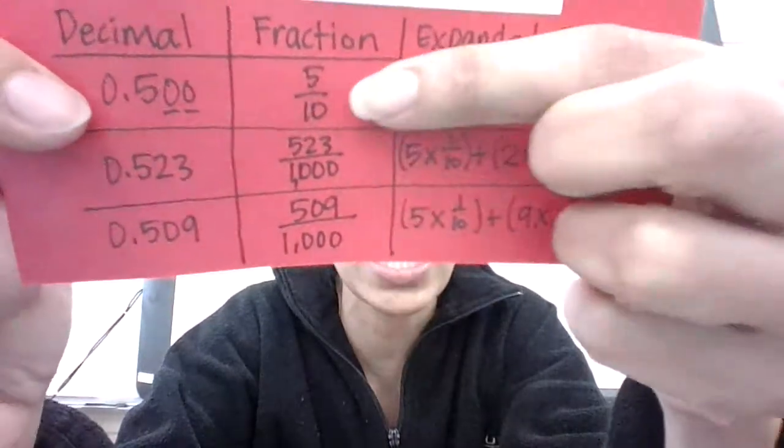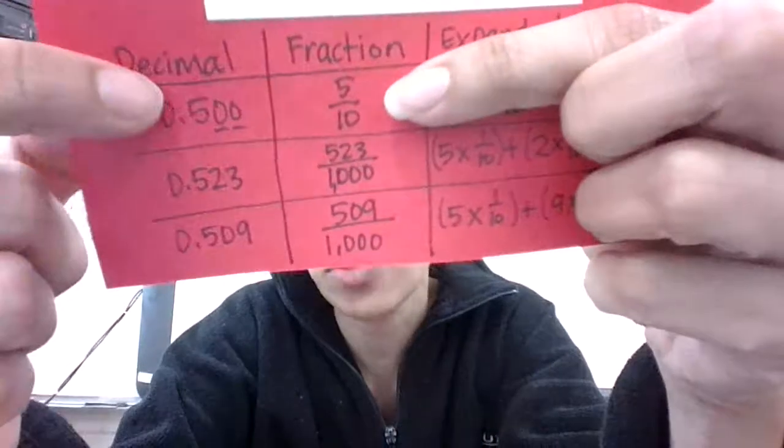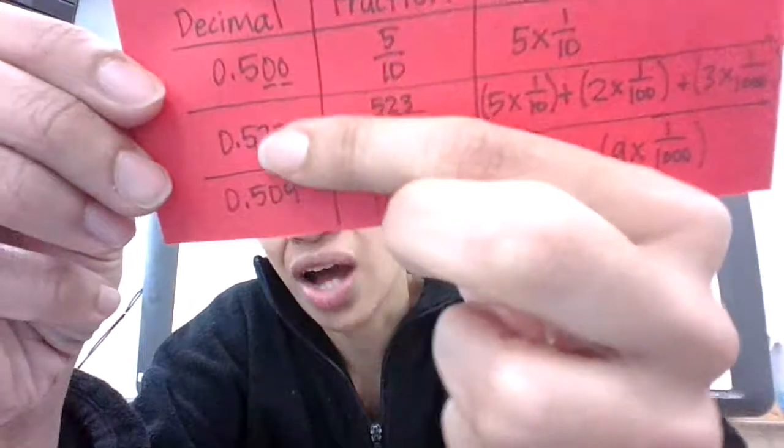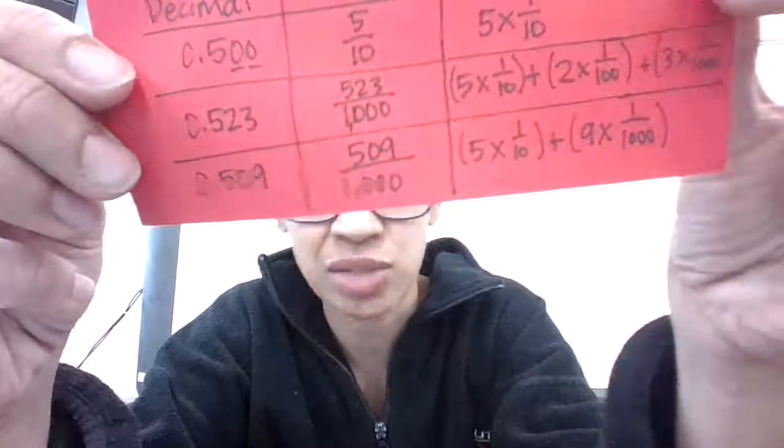And the fraction for that is 5/10. And the decimal form of that is 0.500. Now, do you know why I added these zeros right here? Because the other numbers have three digits after the decimal, okay?